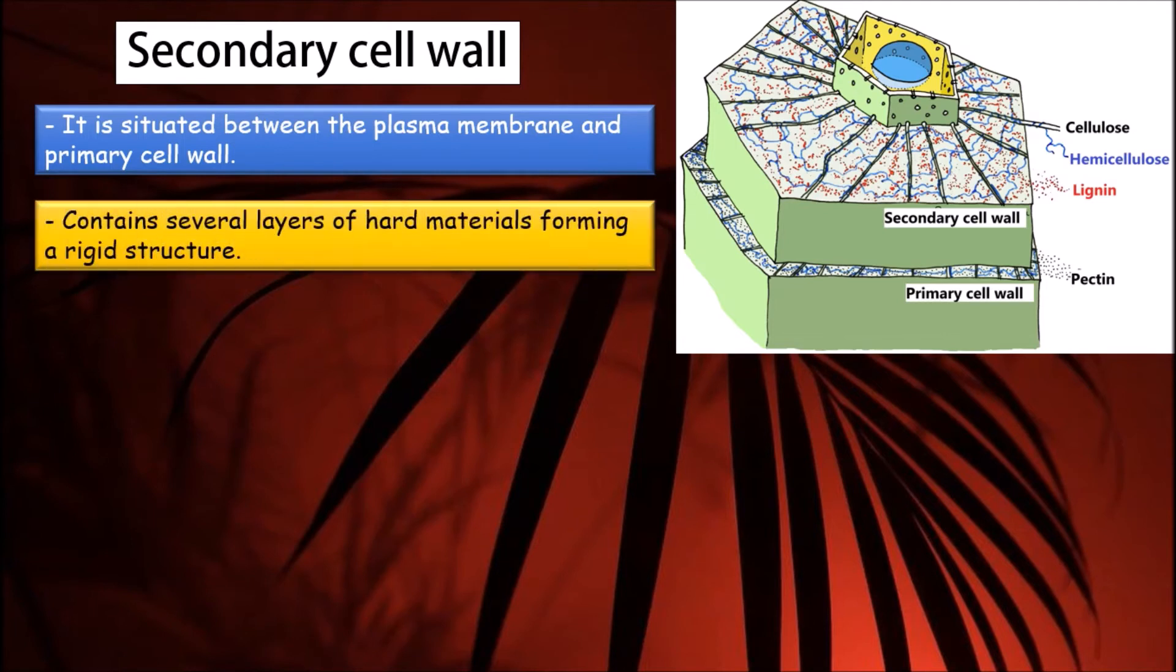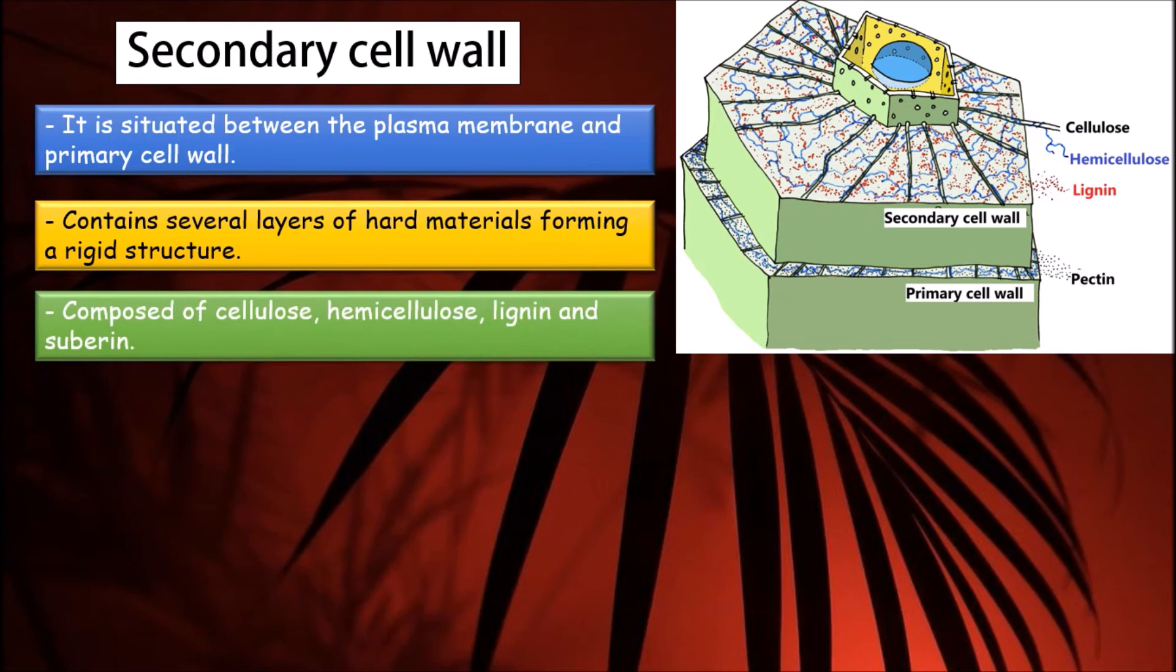It contains several layers of hard materials forming a rigid structure. Secondary cell wall also contains cellulose and hemicellulose as in primary cell wall, but in addition to them, impermeable substances such as lignin and suberin are also incorporated into the secondary cell wall.